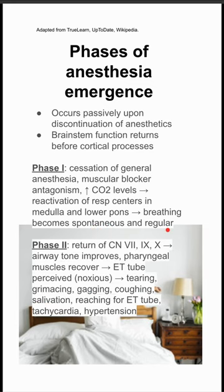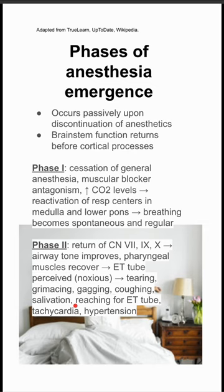In phase two, you have return of cranial nerves seven, nine, and ten. This means that the patient's airway tone is going to improve, and their pharyngeal muscles recover. They start to perceive the endotracheal tube, which is of course a noxious stimulus, so this can cause tearing, grimacing, gagging, coughing, salivation, reaching for the ET tube, tachycardia, and hypertension.